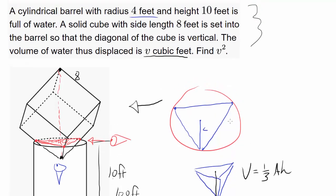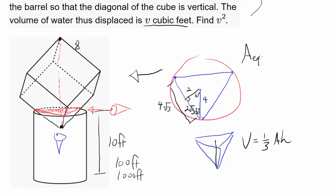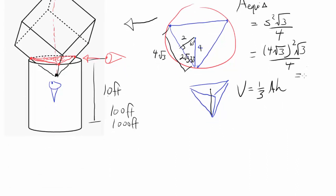We know the radius is 4. Drawing a perpendicular from the center gives a 30-60-90 triangle, since the equilateral triangle has 60-degree angles. Applying the ratios, this side is 2 and this side is 2√3, so the full side length is 4√3. Using the equilateral triangle area formula — side squared times √3 over 4 — the area is (4√3)² × √3/4 = 16 × 3 × √3/4 = 12√3.